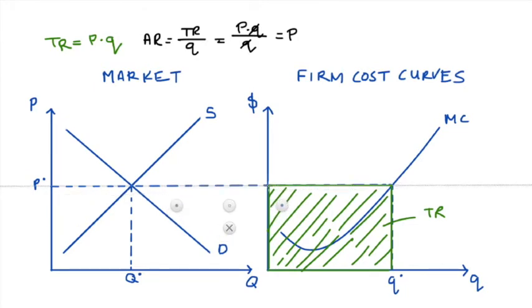So in perfect competition, this line of the price that comes from our market, and I'll just make it darker here so it's clear, that's actually our line that tells us our average revenue as well as the price.